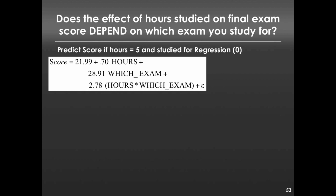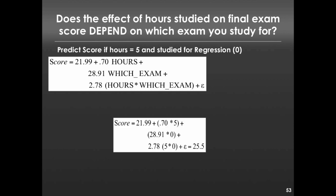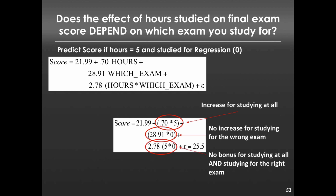Now imagine someone spent five hours studying but for the wrong exam — regression instead of marketing research. Plugging in the values: 21.99 + 0.70 × 5 + 28.91 × 0 + 2.78 × 5 × 0. The which_exam terms and interaction term all drop to zero, and we predict this person would only get 25.5 on their exam. There's a small increase for studying at all, but no increase for studying for the wrong exam and no interaction bonus.